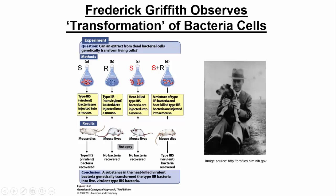The 2R type, indicated by blue, is non-deadly. If you injected this into the mice, the mice lived, and you recovered no bacteria from their bloodstream, because the immune system of the mouse destroyed the bacteria. Those are the control groups. He also took the 3S type, heat-killed them — boiled them, killed them all — and injected them into a mouse. The mouse lived, because if you kill the bacteria, they're not going to kill the mice, and no bacteria was recovered from the bloodstream.